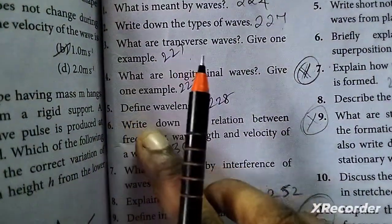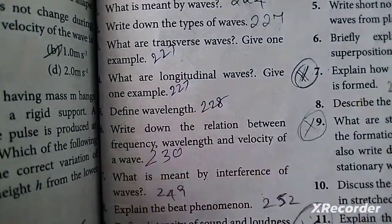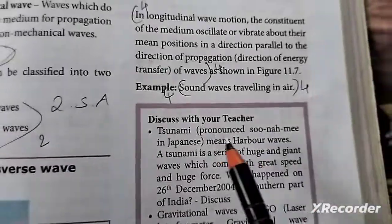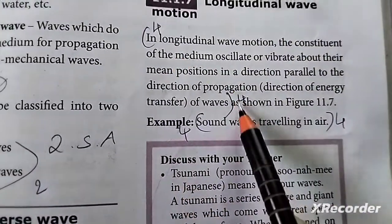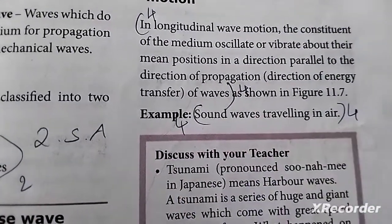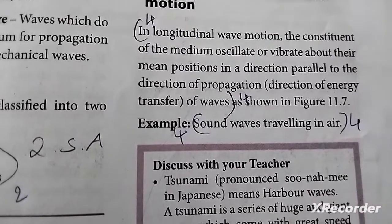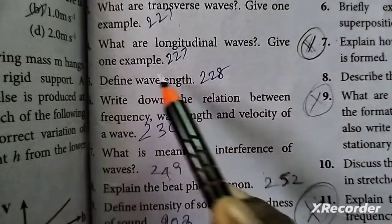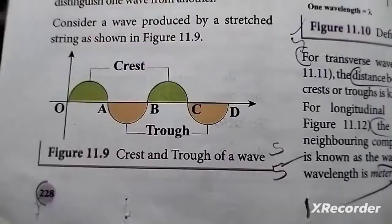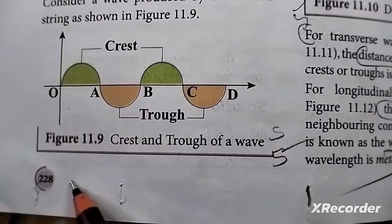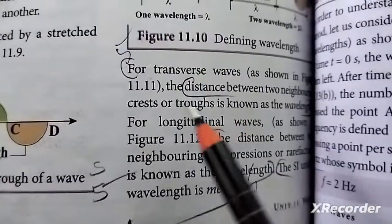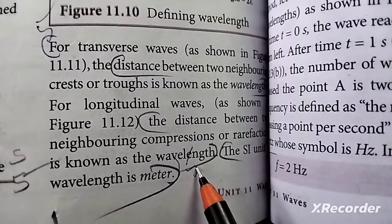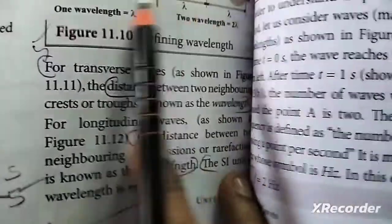4th question answer is on page 227. The next question answer is on page 228. 5th question answer is also on page 228.